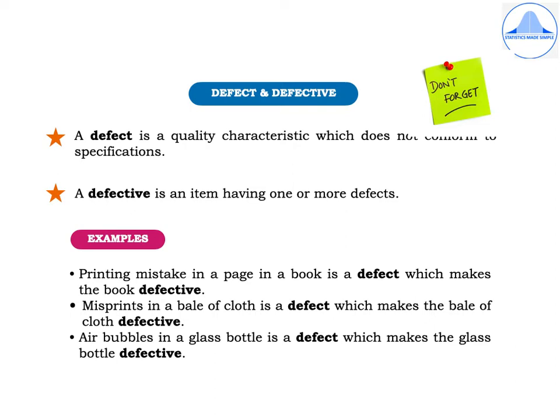Let us take a few examples. A printing mistake in a page in a book is a defect which makes the book defective. Misprints in a bale of cloth is a defect which makes the bale of cloth defective. Similarly, air bubbles in a glass bottle is a defect which makes the glass bottle defective.